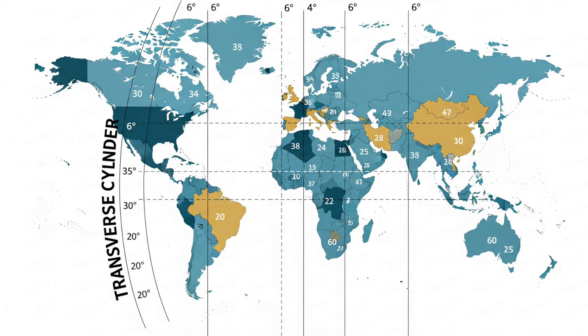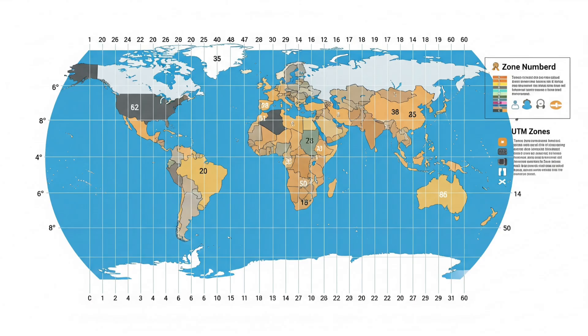So what exactly is UTM? The Universal Transverse Mercator is a global map projection system that divides the Earth into 60 vertical zones, each 6 degrees wide in longitude.